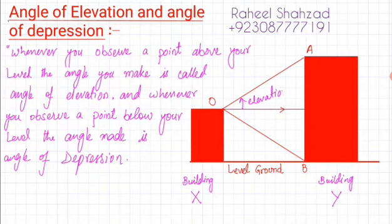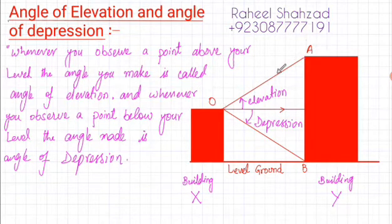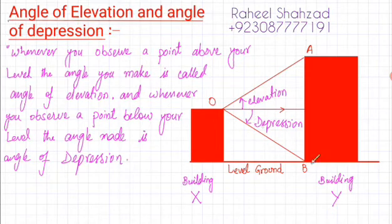The observer makes this angle, which is known as angle of elevation. When you observe a point below your level, that angle is known as angle of depression. So angle of elevation is when you observe any point above your level, and angle of depression is when you observe any point below your level.